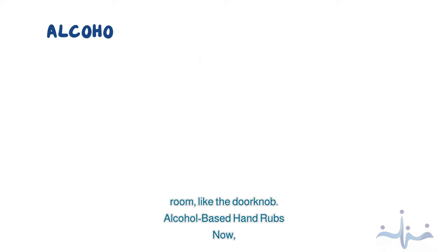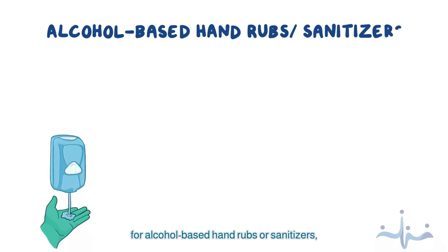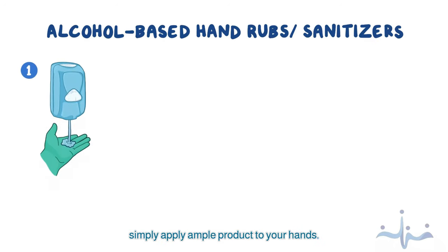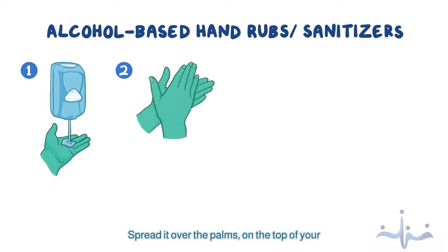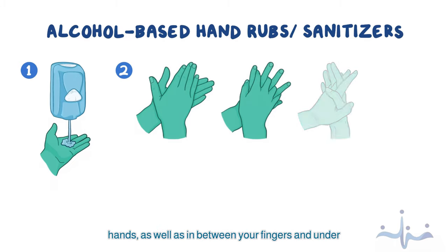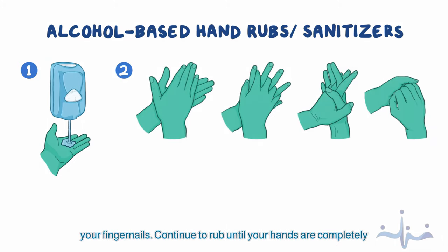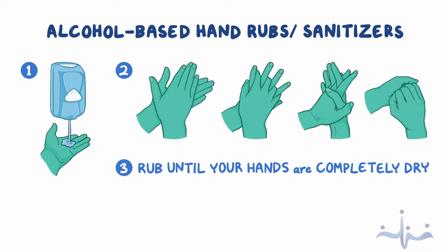For alcohol-based hand rubs or sanitizers, simply apply ample product to your hands. Spread it over the palms, on the top of your hands, as well as in between your fingers and under your fingernails. Continue to rub until your hands are completely dry.